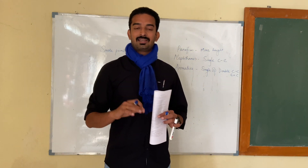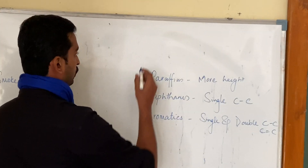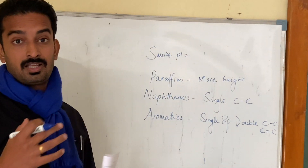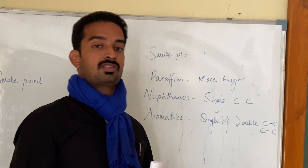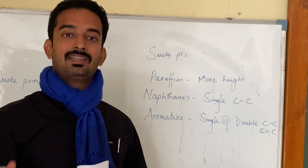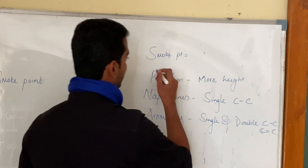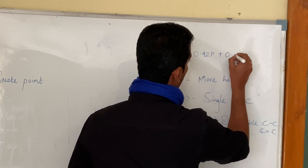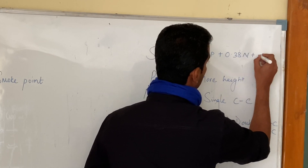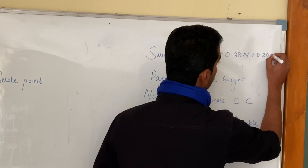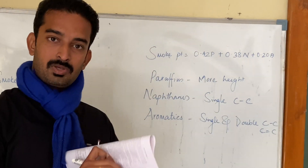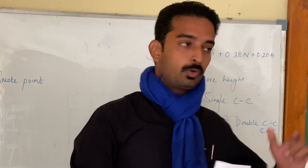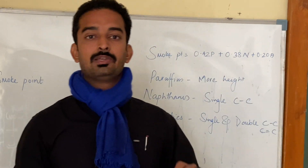If you want to determine the smoke point theoretically, there is an empirical equation. Based on the percentage of paraffins, naphthenes, and aromatics, you can predict the smoke point. The equation is: 0.42 times percentage of paraffins, plus 0.38 times percentage of naphthenes, plus 0.2 times percentage of aromatics. If you know how much naphthenes, aromatics, and paraffins are in your fuel, you put it into this equation and get the approximate value of smoke point.